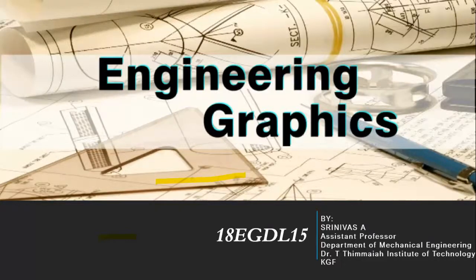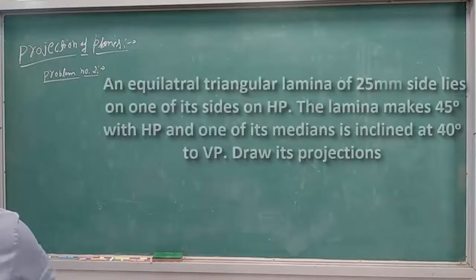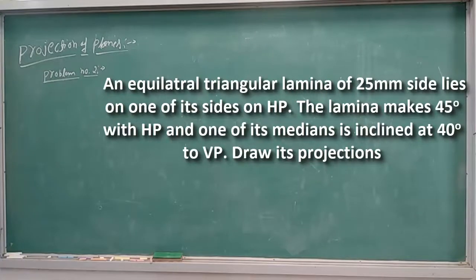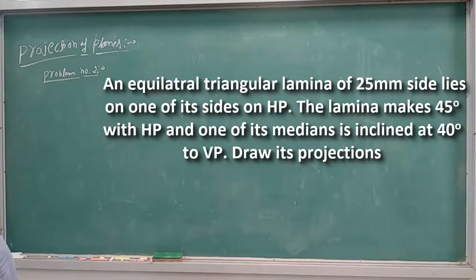Welcome back to engineering graphics class. Today's session we will discuss the projection of planes, Problem number 2. The question is given like this: an equilateral triangular lamina of 25 mm sides lies on one of its sides on HP. The lamina makes 45 degrees with HP and one of its medians is inclined at 40 degrees to VP. Draw its projections.